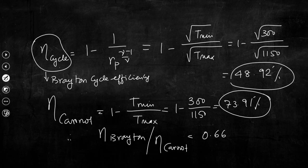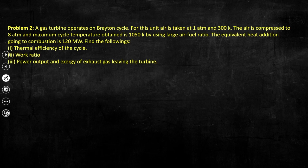Moving to the second problem: a gas turbine operates on the Brayton cycle. Air is taken at 1 atm and 300 K, compressed to 8 atm, and the maximum cycle temperature is 1050 K using a large air-fuel ratio. The large air-fuel ratio means we can assume the working fluid mass flow rate equals that of air alone. The equivalent heat addition in combustion is 120 MW. We need to calculate: thermal efficiency, work ratio, power output, and exergy of the exhaust gas leaving the turbine.